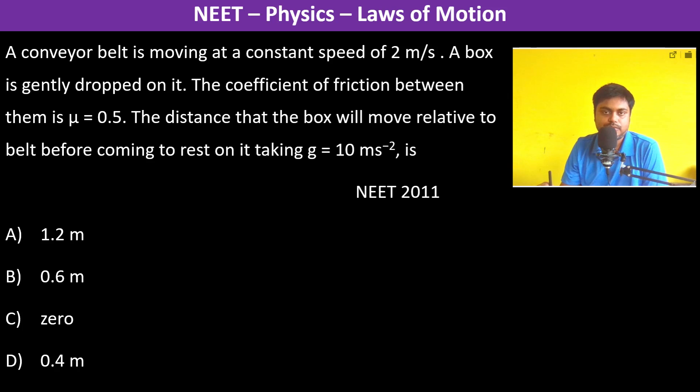A conveyor belt is moving at a constant speed of 2 meters per second. A box is gently dropped on it.